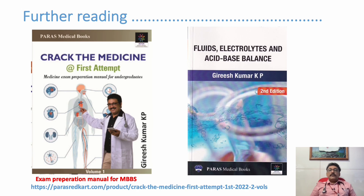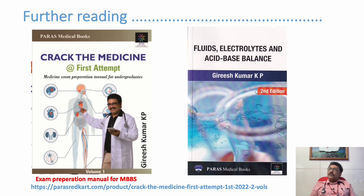In summary, metabolic alkalosis is one of the most important problems in the emergency room. Key causes to remember are Cushing syndrome, Conn syndrome, diuretic use, and severe vomiting—the most common being severe vomiting, which produces hypokalemia and metabolic alkalosis. Most importantly, never miss Conn syndrome, which classically presents with high BP, low potassium, metabolic alkalosis, and very high urinary potassium. Thank you.